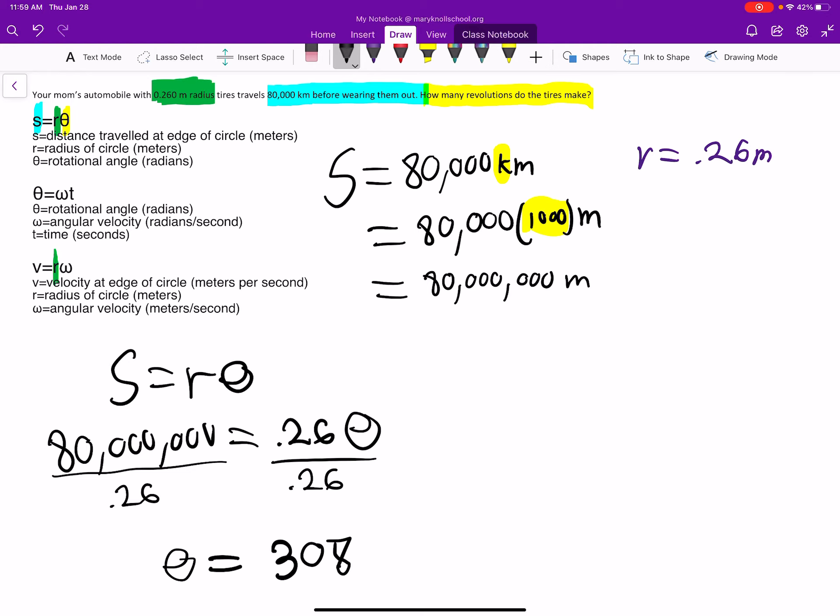And then we get a bunch of zeros: 1, 2, 3, 4, 5, 6 zeros. And again, I'm just using three significant digits here. That's why I'm rounding.